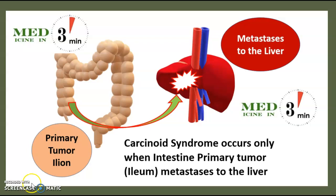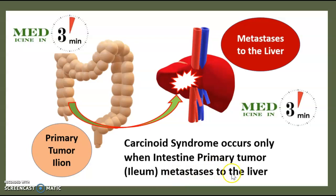What is carcinoid syndrome? Carcinoid syndrome occurs only when an intestinal primary tumor — specifically of the ileum — metastasizes to the liver.